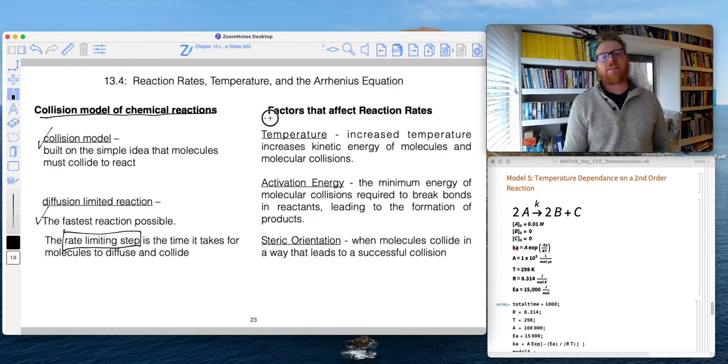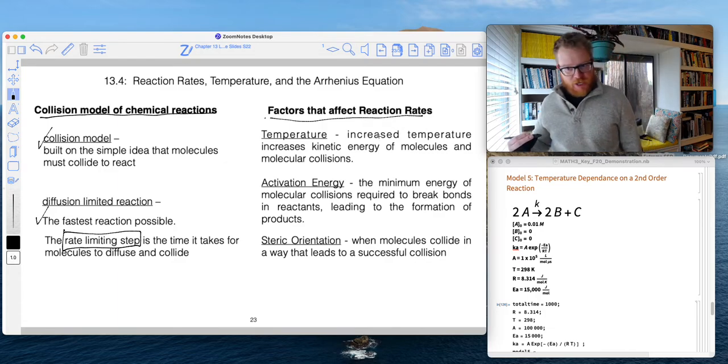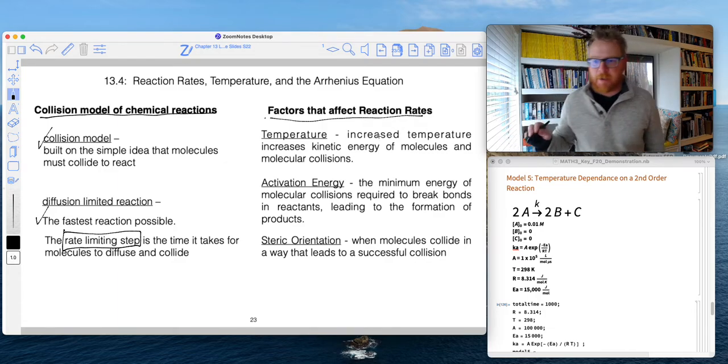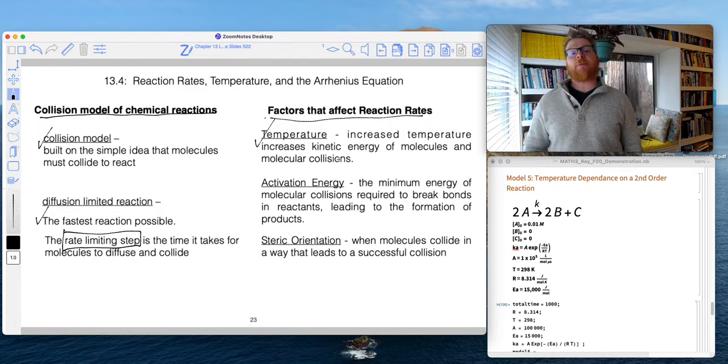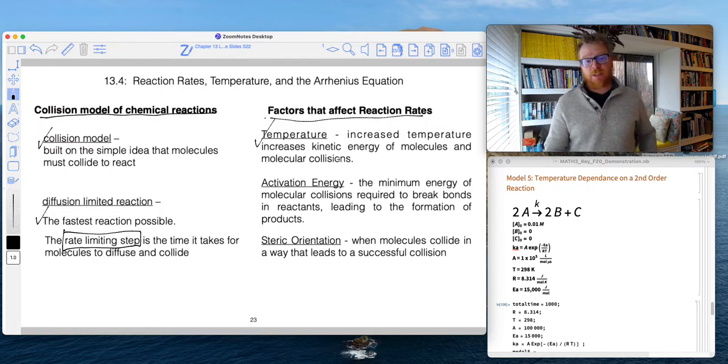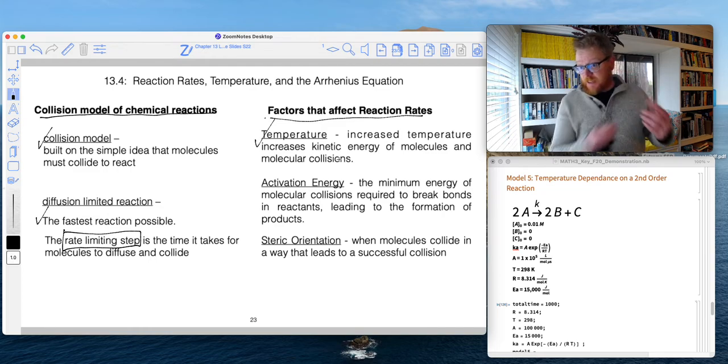So factors that can affect reaction rates. So we've talked about concentration and reaction order. We've talked about that a whole bunch. And of course that's super important. But if we want to get even more fundamental factors that affect reaction rates, definitely temperature. So as we increase temperature, we increase the kinetic energy of molecules and thus we increase the number of collisions. So as our molecules are getting hotter, they're moving around faster, they're more likely to collide, which would lead to a faster reaction.